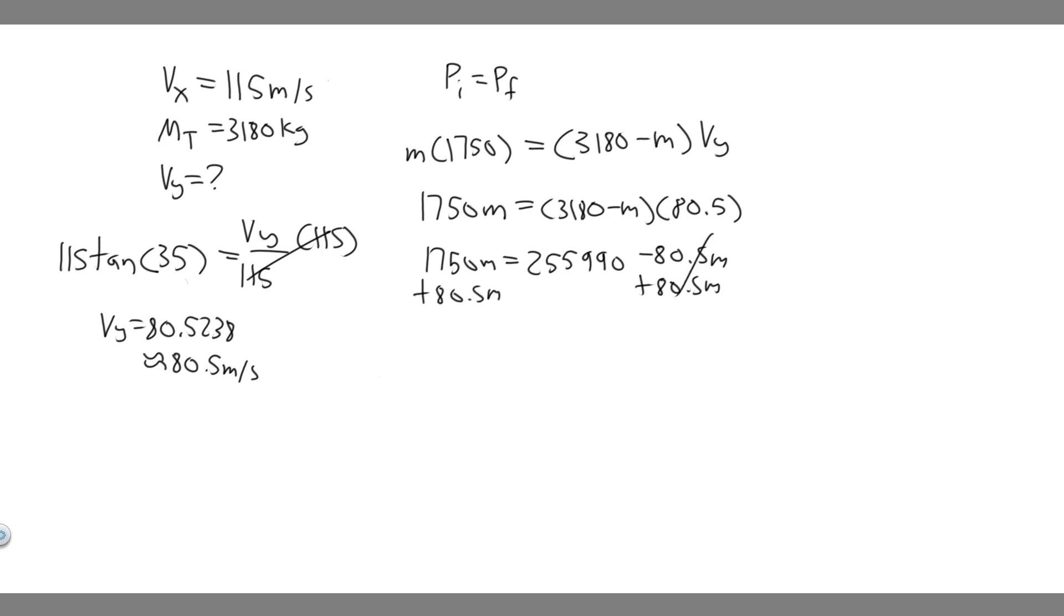So 1750 plus 80.5 is 1830.5 m, and it's equal to 255990. Divide by 1830.5. We're just doing algebra. So 255990 divide by 1830.5.